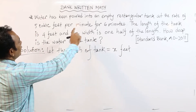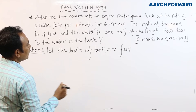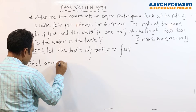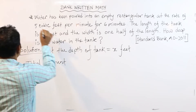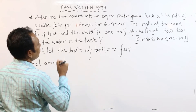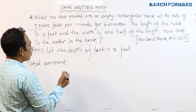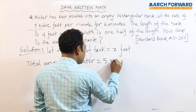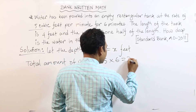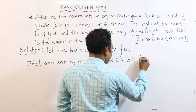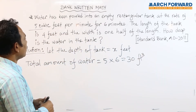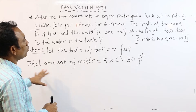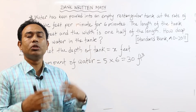Now we calculate the volume. The total amount of water is 5 into 6, which equals 30 cubic feet. This is the volume of the rectangular tank.